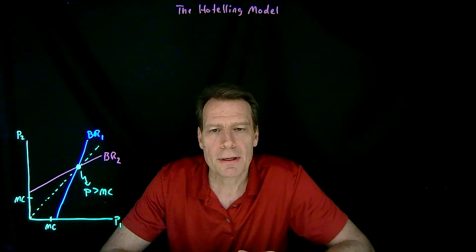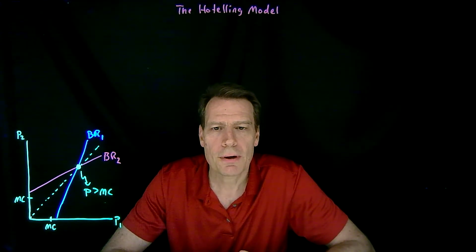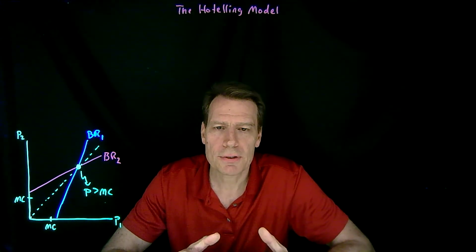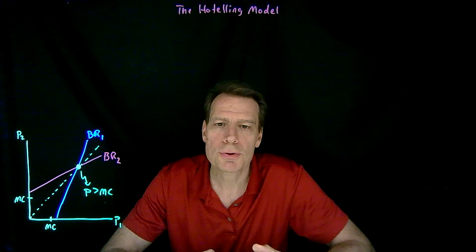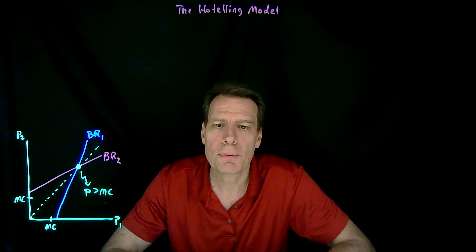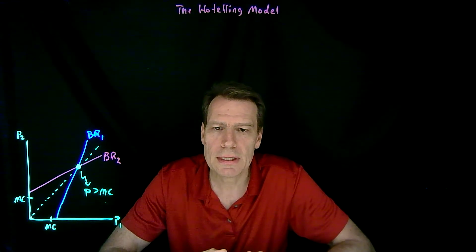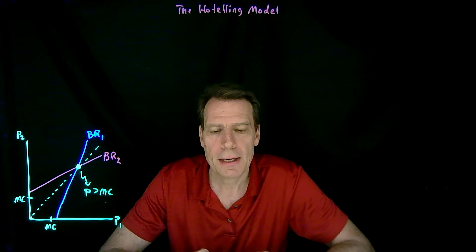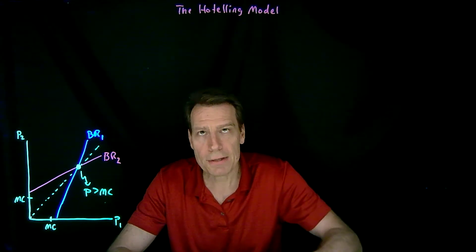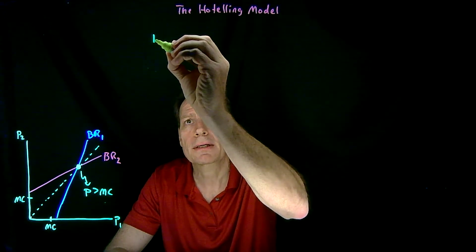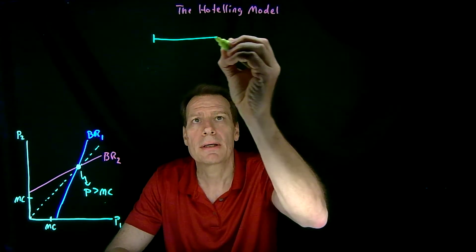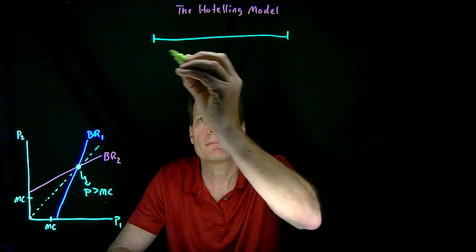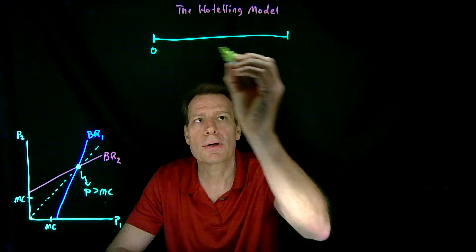We now want to think about the choice of product differentiation — the choice of your product characteristics as a strategic choice. One of the first models to ever do that was the Hotelling model. This model imagined that firms could choose a product characteristic that lies on a continuum between zero and one.